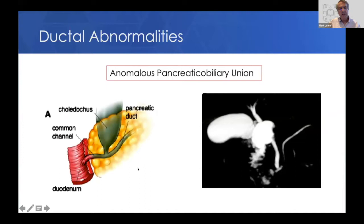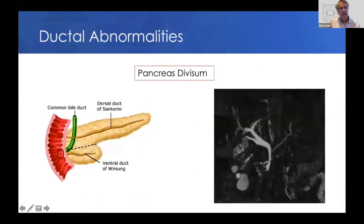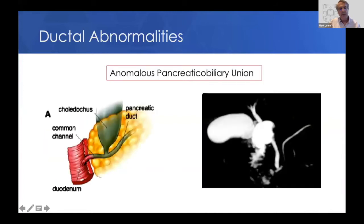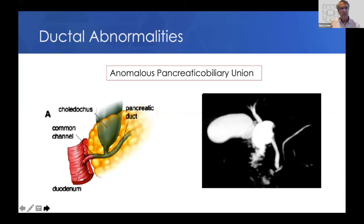If the process doesn't occur properly, sometimes the common bile duct joins the pancreatic duct further upstream, so there's a long common channel, shown in this diagram and also on this MRCP. This is where the main pancreatic duct joins the duodenum, creating a long common channel. This can lead to obstruction, increased incidence of pancreatitis, and is sometimes associated with dilation of the common bile duct called a choledochal cyst. These do increase your risk for developing episodes of recurrent pancreatitis — this is called an anomalous pancreatic biliary union.